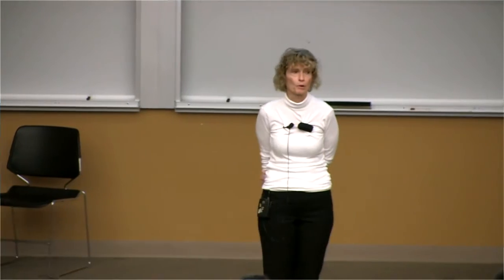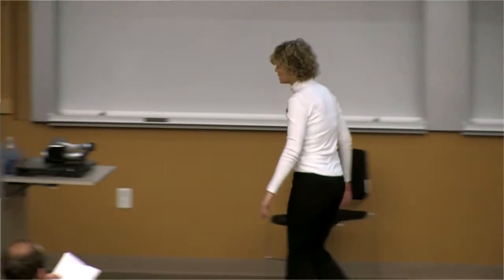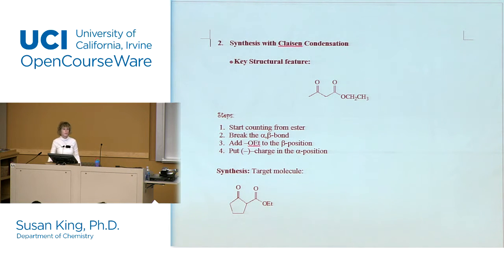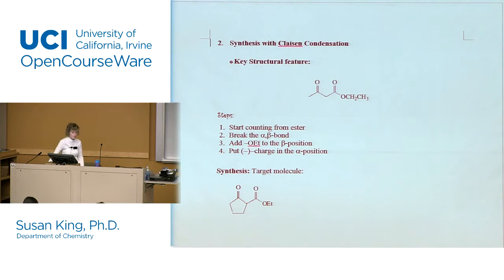We're going to get started. We're going to talk about retrosynthesis for the Claisen, so we can figure out how to make compounds by Claisen condensation. Anybody have questions before we get started? So we're going to take apart — if I give you a compound and I say show me how you can make this using a Claisen condensation, we had steps to do that with an aldol, we have steps to do this with a Claisen. Here are the steps.